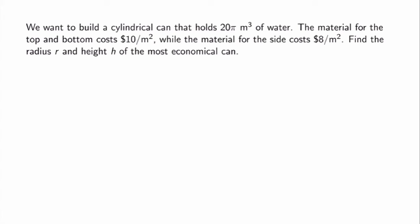Here's a typical optimization problem. We want to build a cylindrical can that holds 20pi meters cubed of water. The material for the top and bottom of the can costs $10 per meter square, while the material for the side only costs $8 per meter square. We want to find the radius and height of the can such that it is the most economical — so the cost is minimized.